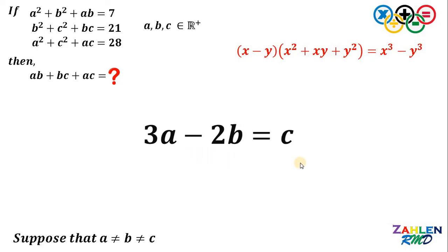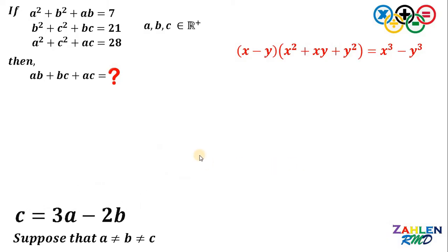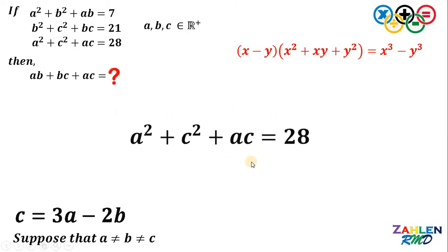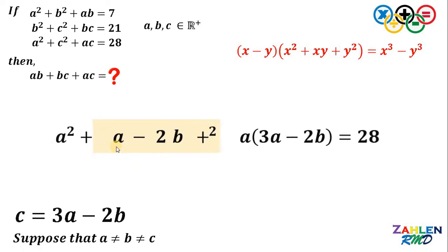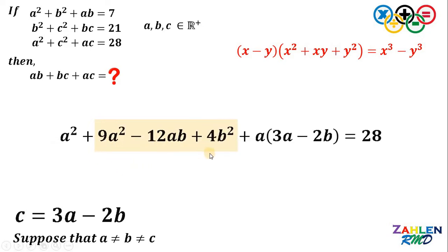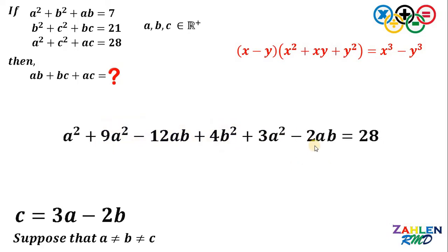Let's set aside this result for a while. Now let's take the third equation: a squared plus c squared plus ac equals 28. We know the value of c, which is 3a minus 2b. So let's replace all c with 3a minus 2b. Let's focus on the expression 3a minus 2b quantity squared. If we square this, it gives us 9a squared minus 12ab plus 4b squared. And distributing a gives us 3a squared minus 2ab.